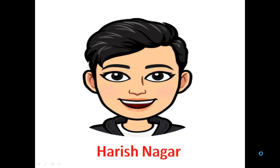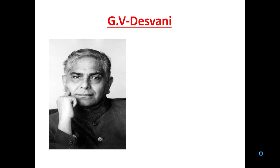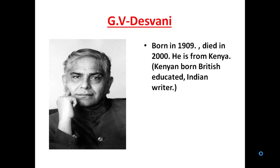Hello guys, this is Harish Nagar and today I am going to talk about G.V. Desani. G.V. Desani was born in the year 1909 and he died in the year 2000. He is from Kenya, so he is a Kenya-born, British-educated Indian writer — he has a lot of nationalities mingling in his own personality.